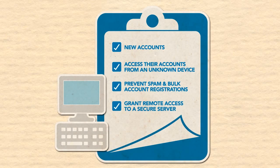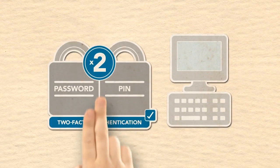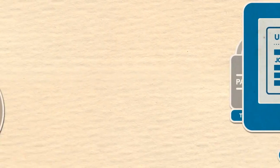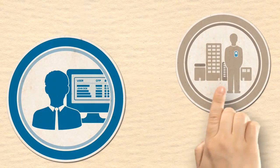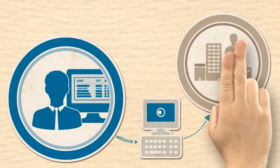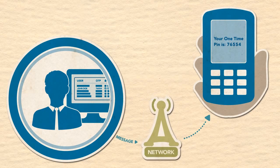It's also ideal to grant remote access to a secure server. To implement mobile two-factor authentication, you'll need a software component that generates and authenticates one-time PINs. You'll also need the ability to deliver your one-time PINs to your user's mobile phones via SMS. With two-factor authentication via SMS, your users won't need a smartphone or special app, as even the most basic handsets can receive SMS messages. Also, your users won't need internet access, just mobile network coverage.